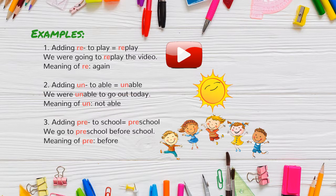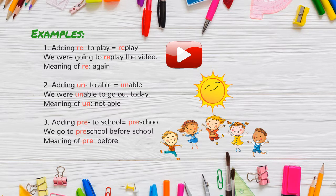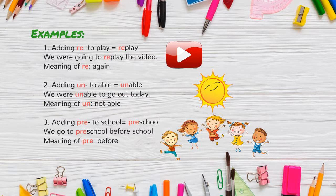Let's take a look at some examples of prefixes. Number one, if we take the prefix re, which means again, and add it to the root word play, it becomes replay. Now it means to play again.